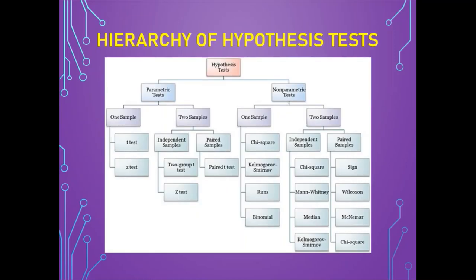The hierarchy of hypothesis tests shows that hypothesis tests are differentiated into parametric and non-parametric tests. Both are divided into one-sample tests and two-sample tests. A one-sample test compares the group mean to a standard or reference value of the population, whereas a two-sample test tests whether the unknown population means of two groups are equal or not. A paired test compares scores on two different variables for the same group, whereas an independent samples test compares scores on the same variable for two different groups.